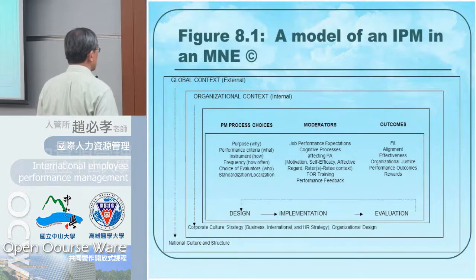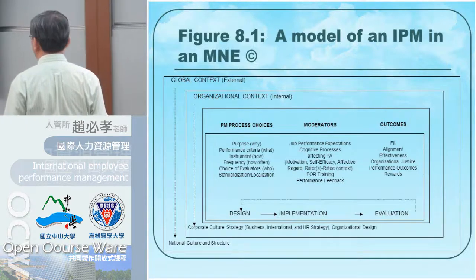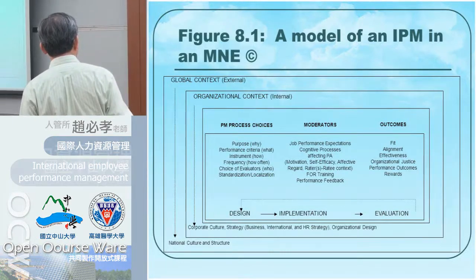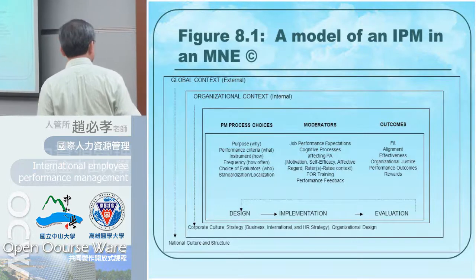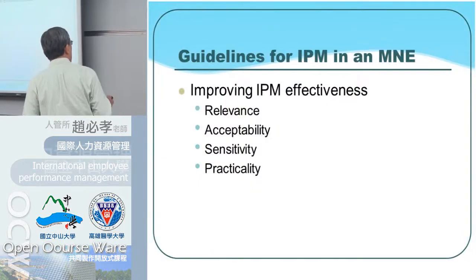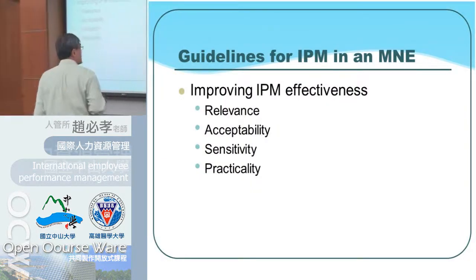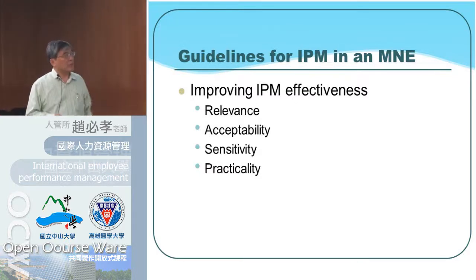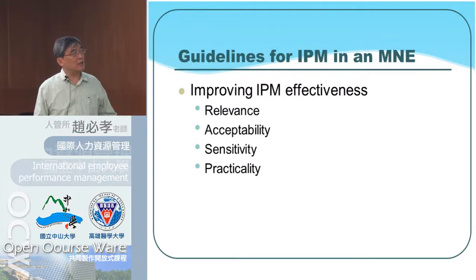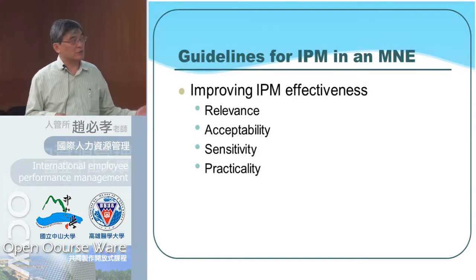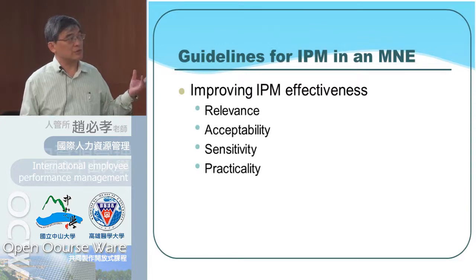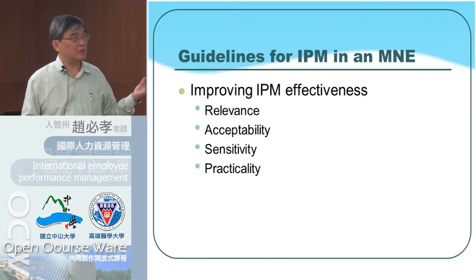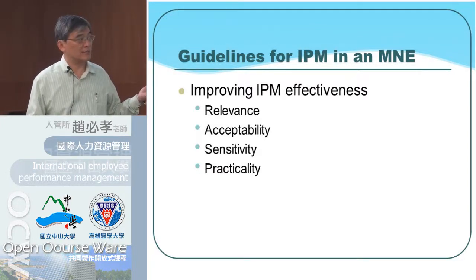Last, you need to check the outcome — evaluate whether this system works or not. Overall, there are some guidelines for the international PN system. First, you need to consider relevance, then acceptability, sensitivity, and practical capacity.